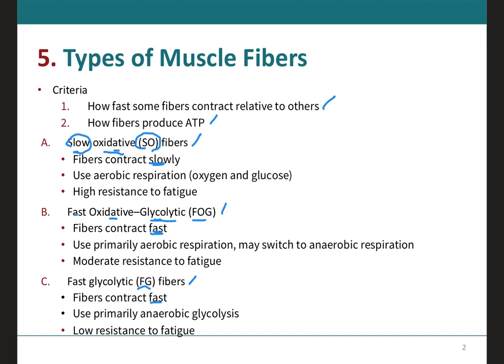The SO fibers are going to use aerobic respiration, which means they use oxygen and glucose to produce ATP, and they will be resistant to fatigue. The FOG fibers will use primarily aerobic respiration, the same as the SO fibers, but sometimes they may switch to anaerobic respiration — this is why they're called fast oxidative and glycolytic fibers. Because they can use both modes of respiration, they are considered to be moderately resistant to fatigue.